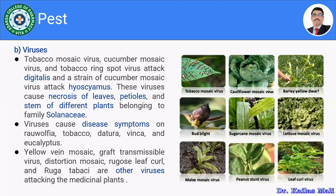Tobacco mosaic virus, cucumber mosaic virus, and tobacco ring spot virus attack digitalis — a medicinal plant including Digitalis lanata and Digitalis purpura, of which we use the leaves. Strains of cucumber mosaic virus attack hyoscyamus. These viruses cause necrosis of leaves and petioles, and affect strains of different plants belonging to family Solanaceae.